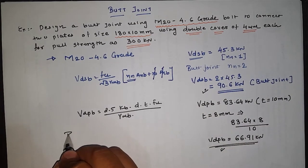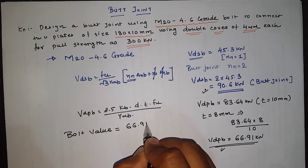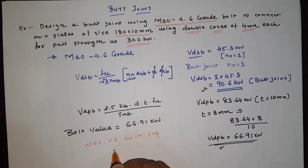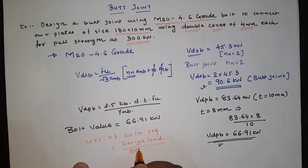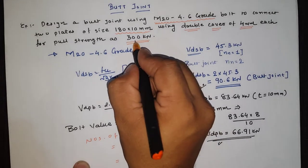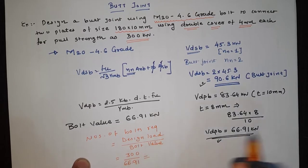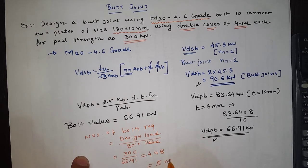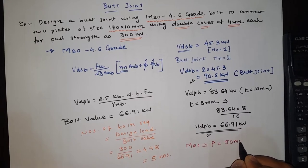For the butt joint, vdsb is 90.6 kN and vdpb is 66.91 kN. The bolt value is the minimum of these two, which is 66.91 kilo newton. Number of bolts required = design load / bolt value = 300 / 66.91 = 4.48. Since bolts must be in whole numbers, we assume 5 bolts. For M20 bolt, pitch = 50 mm and edge distance = 40 mm.